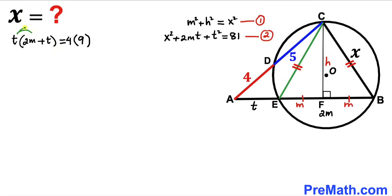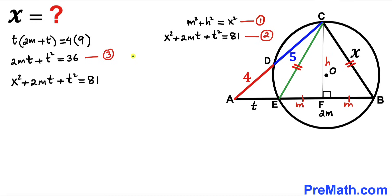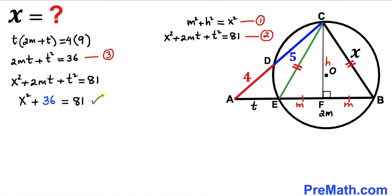Expanding by distribution gives 2mt + t² = 36. We'll label this as Equation 3. Revisiting Equation 2, which is x² + 2mt + t² = 81, we substitute the value from Equation 3: replacing 2mt + t² with 36 gives x² + 36 = 81.